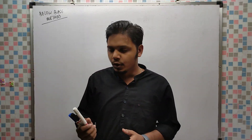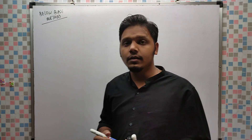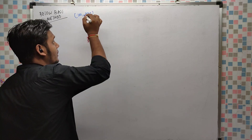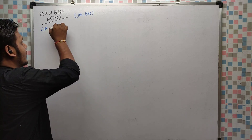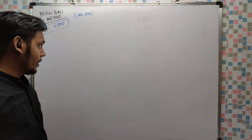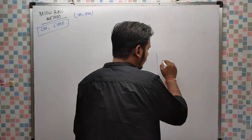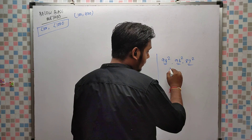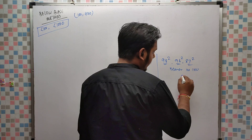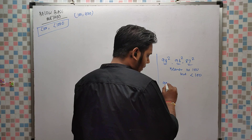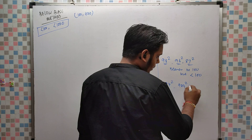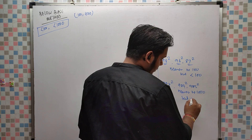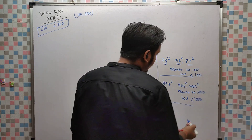Hello students, in this video we are going to learn about the below base method. The numbers which are nearer to 100 or 1000, but less than the base — less than 100 and less than 1000 — we are going to find their squares here. Suppose 98², 96², 87², these are nearer to 100 but less than 100. And 997², 989², 985² — these are nearer to 1000 but less than 1000. Both methods we will discuss.